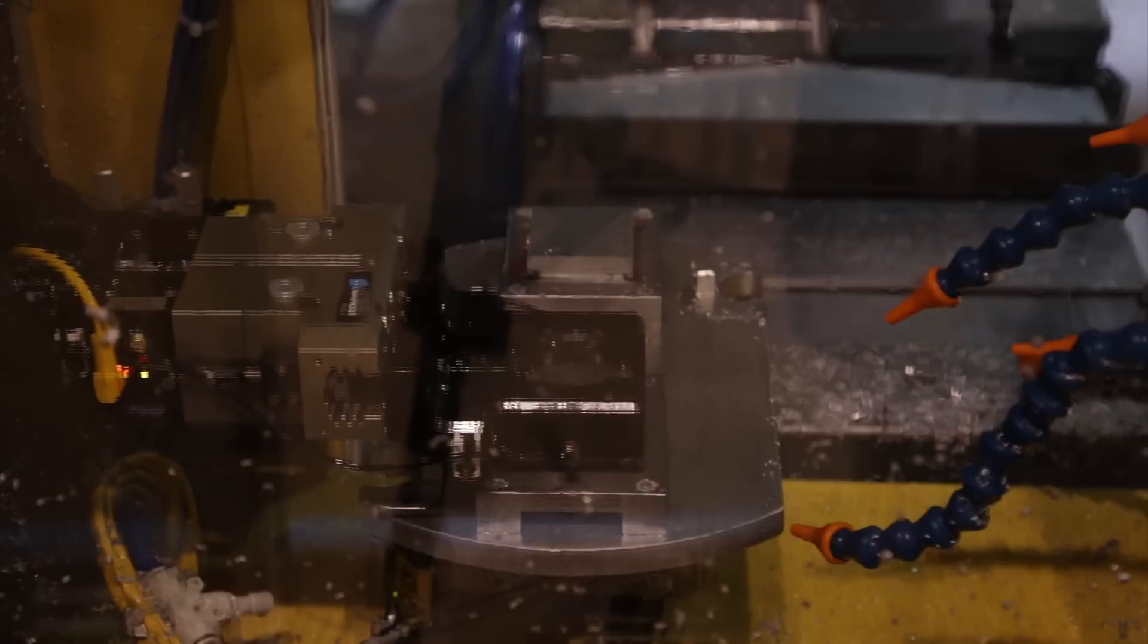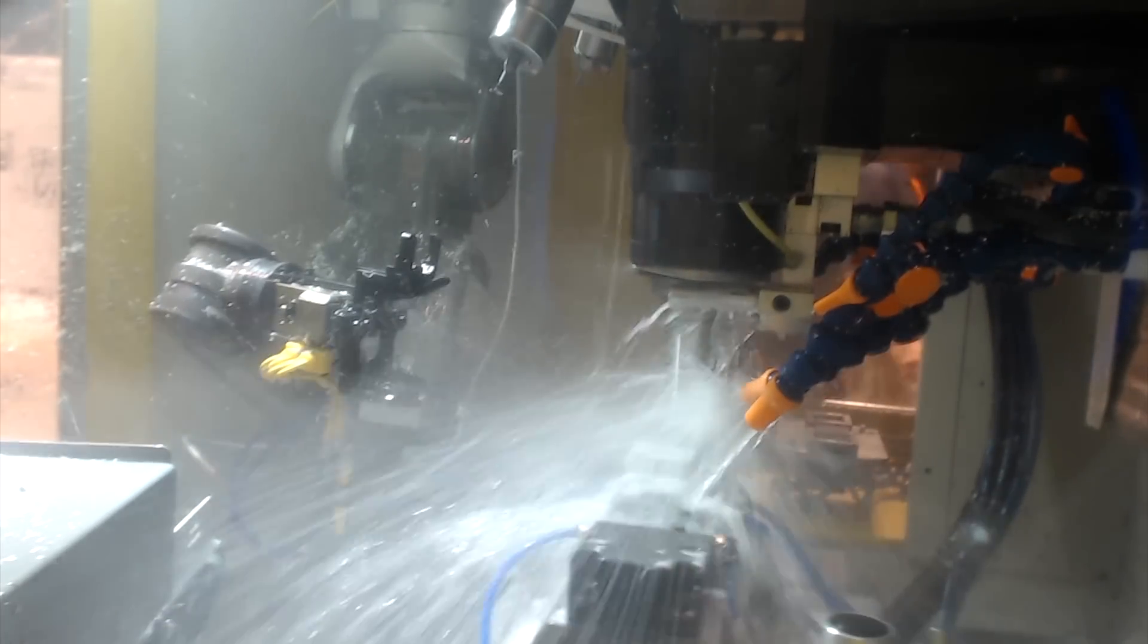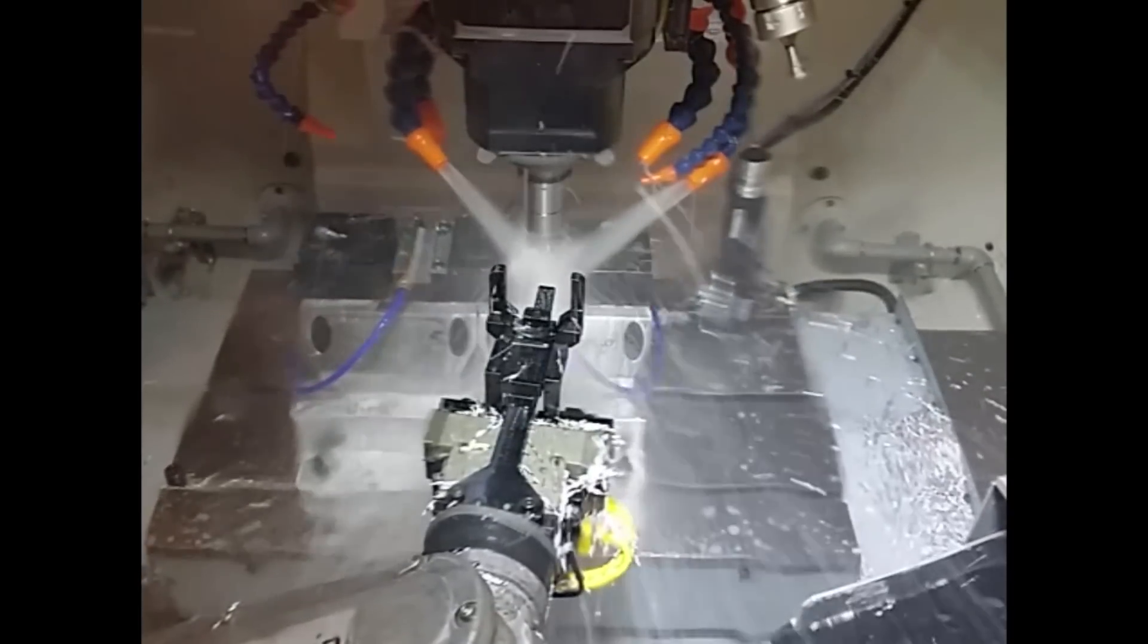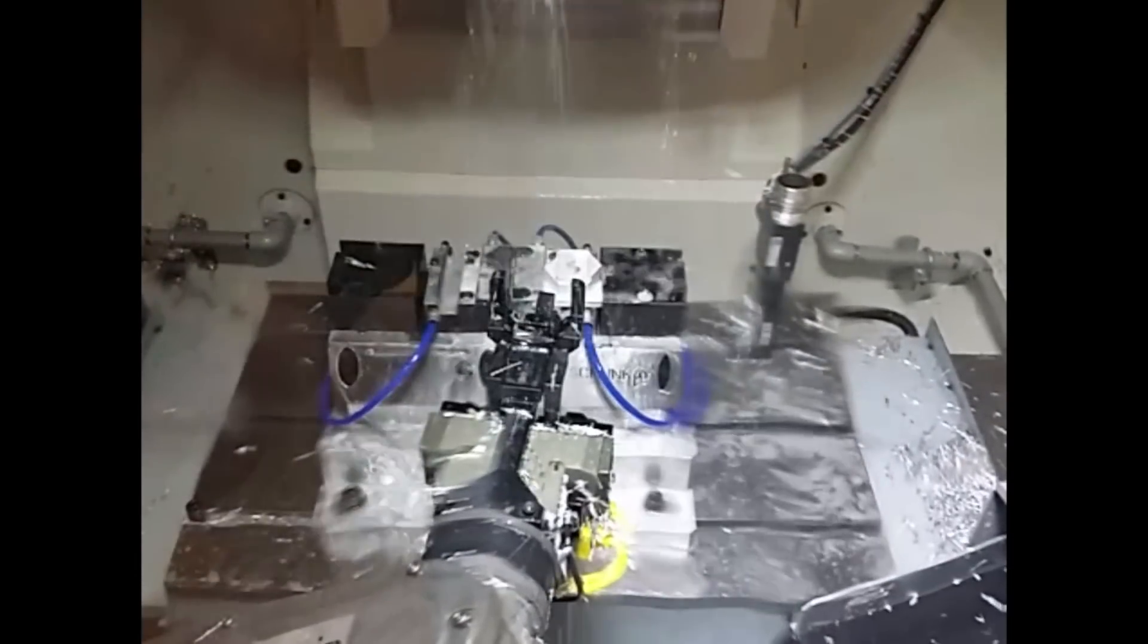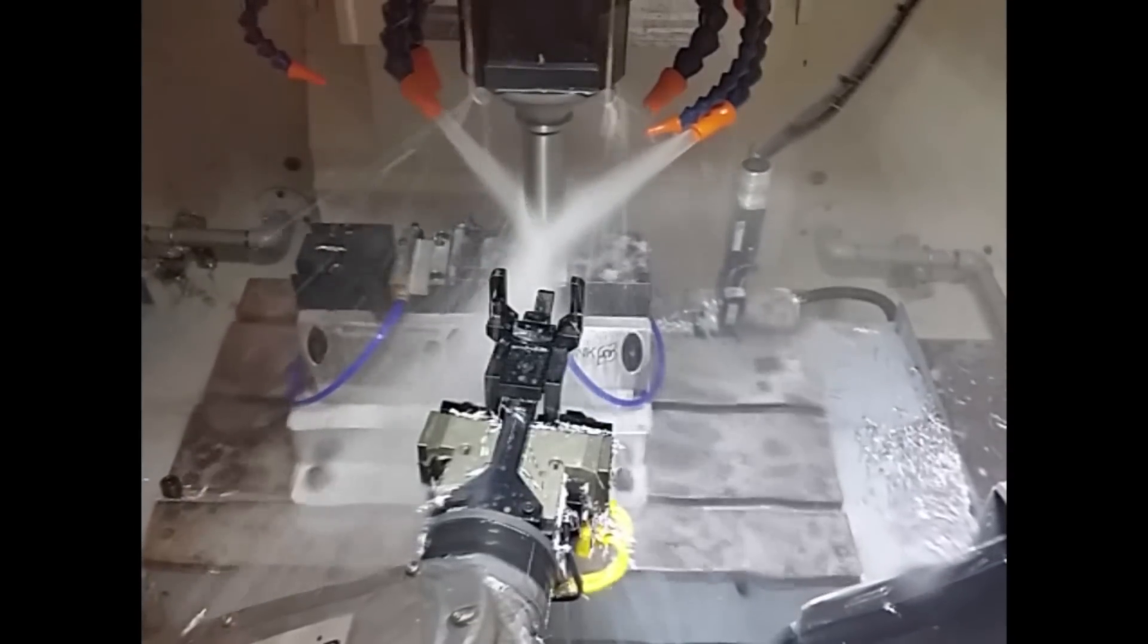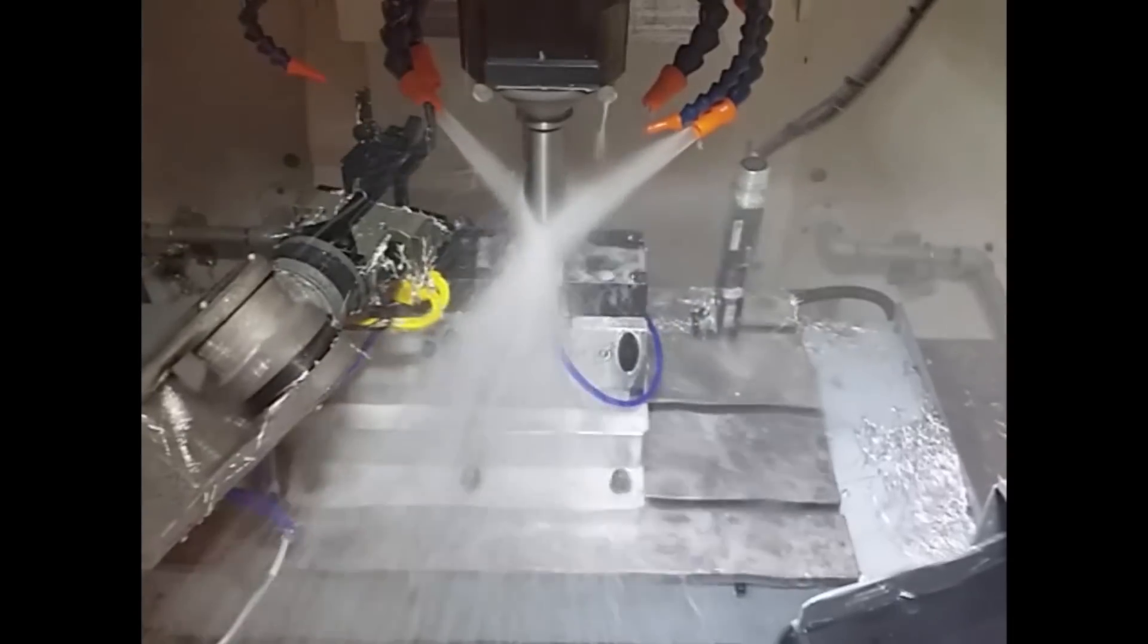The table rotates 180 degrees for the next raw part. The LR-Mate 200ID 7WP moves the part into the open vise on the robo-drill's table. The robot does this while the robo-drill is still machining and in motion, effectively performing two-axis tracking and on-the-fly part exchange through feedback from the Fanuc CNC.